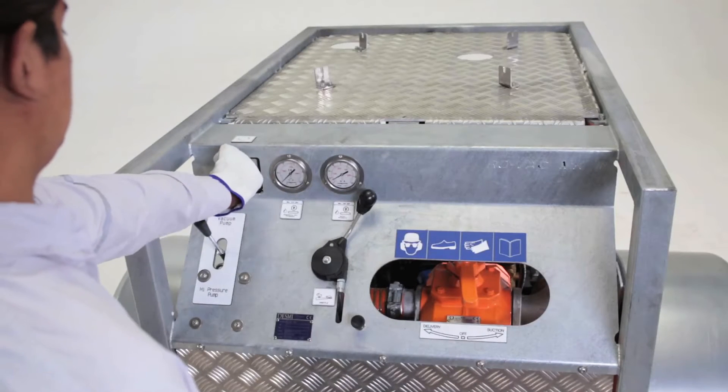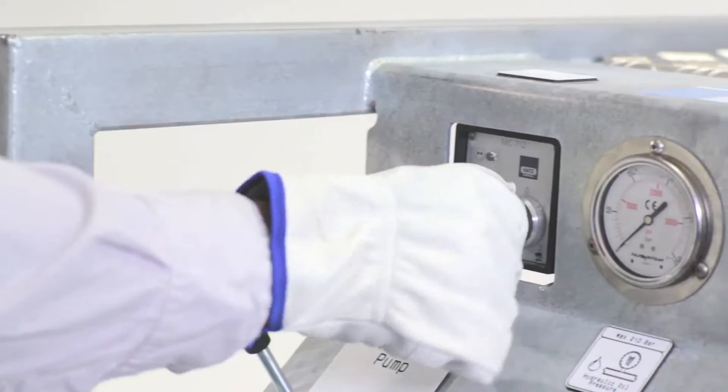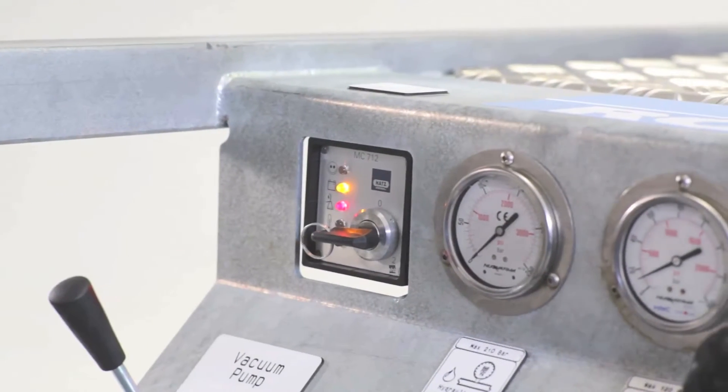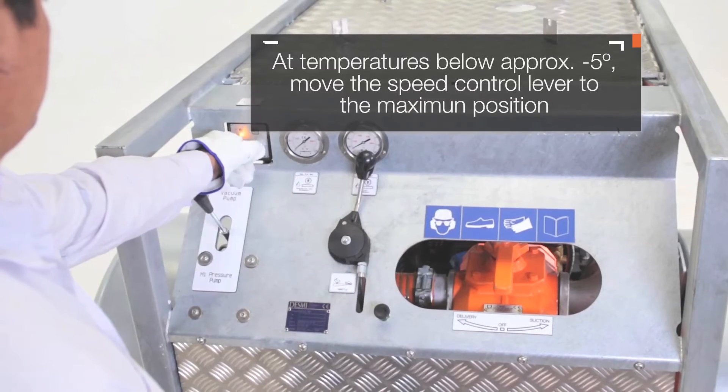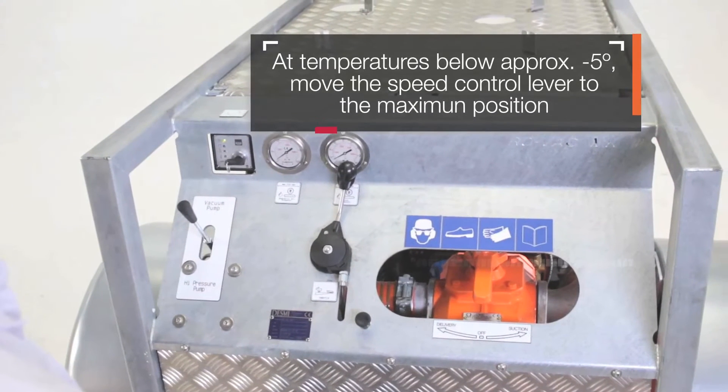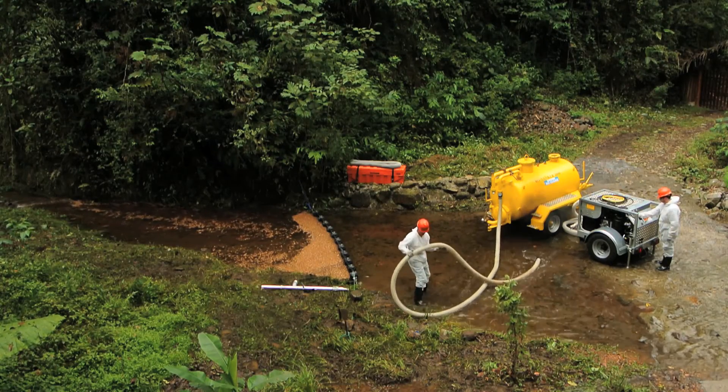Insert the ignition key. Set the throttle control lever to the run position and turn the ignition key until the control lamps, alternator and engine lubrication oil light up. The key should spring back to its previous position and remain there during engine operation.